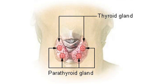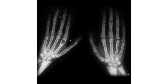Osteoclastic bone resorption releases minerals, including calcium, from the bone into the bloodstream. In addition to elevated blood calcium levels, overactivity of this process results in a loss of bone mass, a weakening of the bones as their calcified supporting structures are replaced with fibrous tissue, and the formation of cyst-like brown tumors in and around the bone.